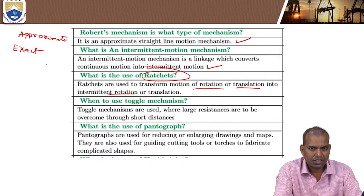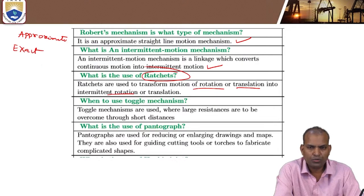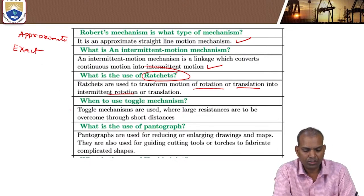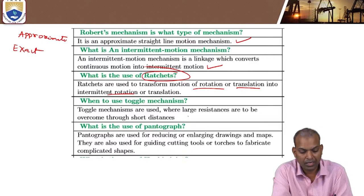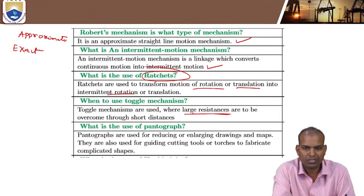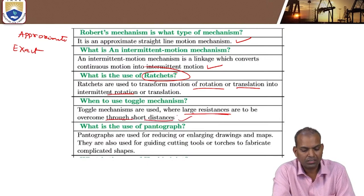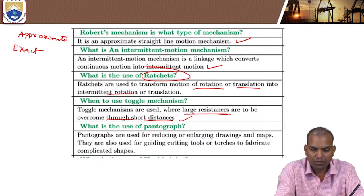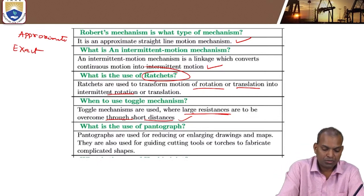There are also toggle mechanisms. When are these used? Toggle mechanisms are used where large resistances are to be overcome through short distances. In such cases, this type of toggle mechanism is used.